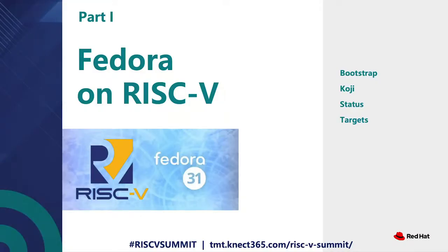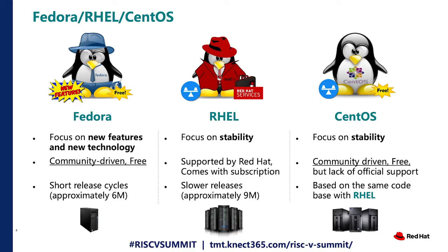First of all, Fedora on RISC-V. As you may know, Red Hat has three different operating systems. One is Fedora, another is RHEL, which is a commercial product, and the last one is also an open source free OS called CentOS. Fedora focuses on new features and new technology. It's free, includes all the cutting-edge features, and the release cycle is much shorter — just twice a year.